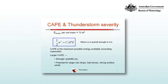Larger CAPE can imply stronger updrafts, and stronger updrafts can support larger raindrops and larger hailstones. The liquid water and the hailstones can spend longer inside the storm, growing in size. CAPE can also produce strong surface winds.